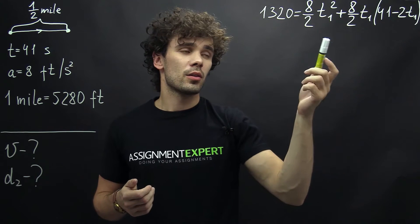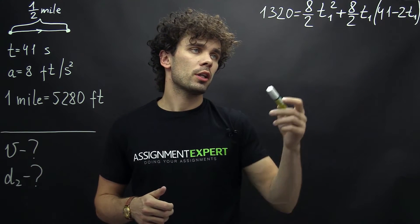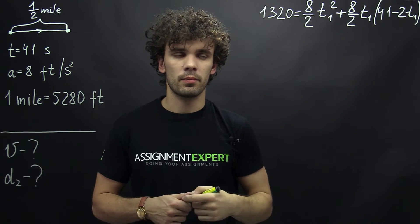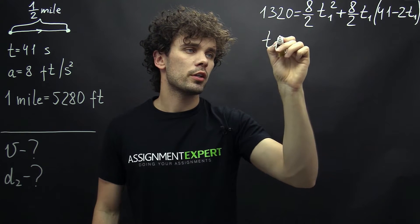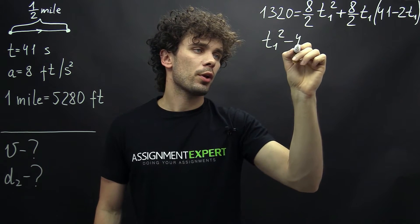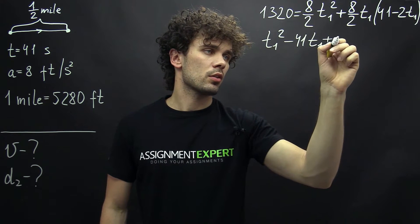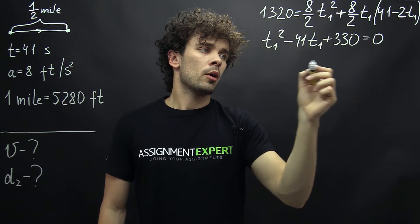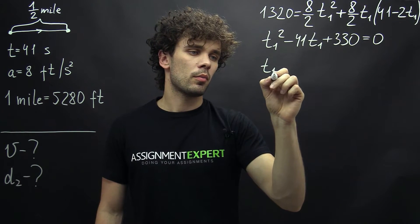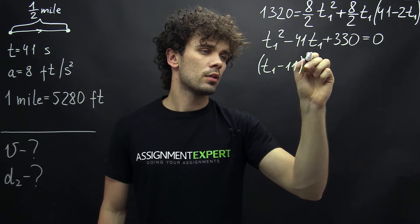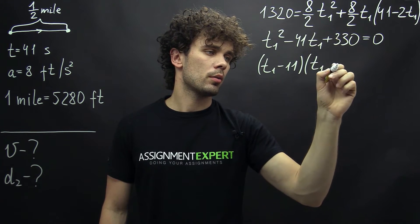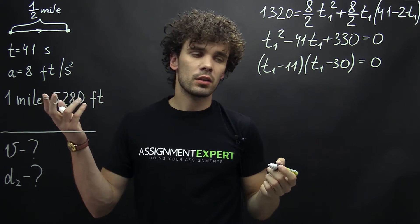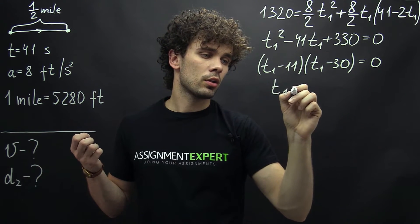Alright guys, so here is the formula we obtained. Now we can cancel out the factors, open the braces, and move all terms to one side. We get the equation T1 squared minus 41T1 plus 330 equals 0. We can rewrite this as T1 minus 11 times T1 minus 30 equals 0. In our case the physical solution will be T1 equals 11.